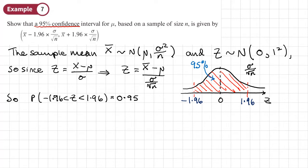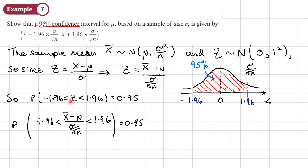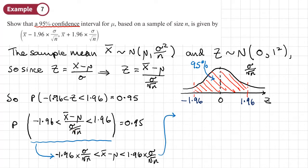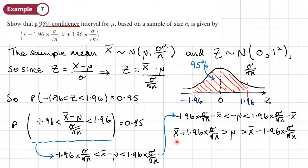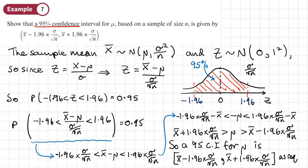From the diagram, we know the probability that z is between minus 1.96 and positive 1.96 is 95 percent. We replace z with the standardized expression, then rearrange: multiply both sides by sigma over root n, then subtract the sample mean from both sides, then multiply both sides by negative 1 — which flips the inequality signs. Writing the result in interval notation gives the final answer as required for a 95 percent confidence interval.